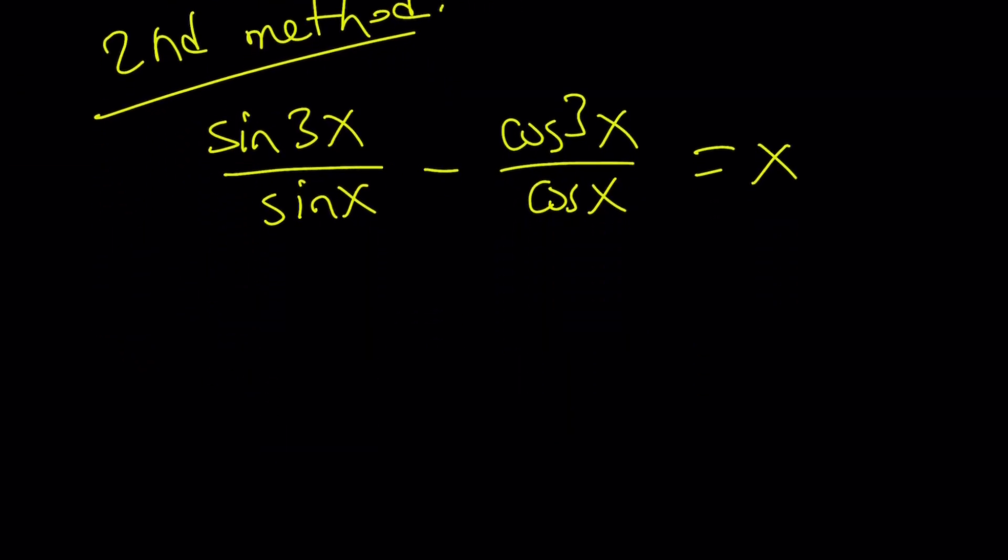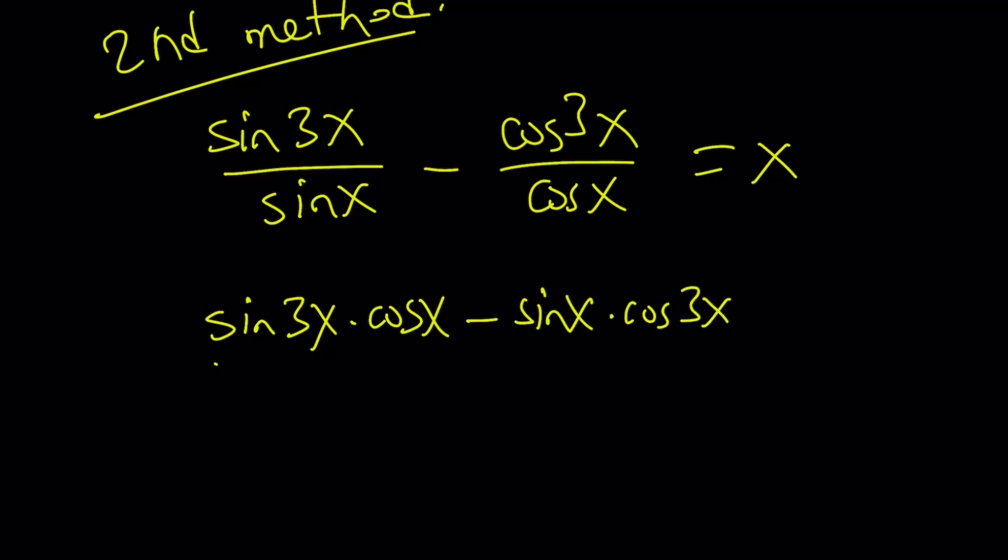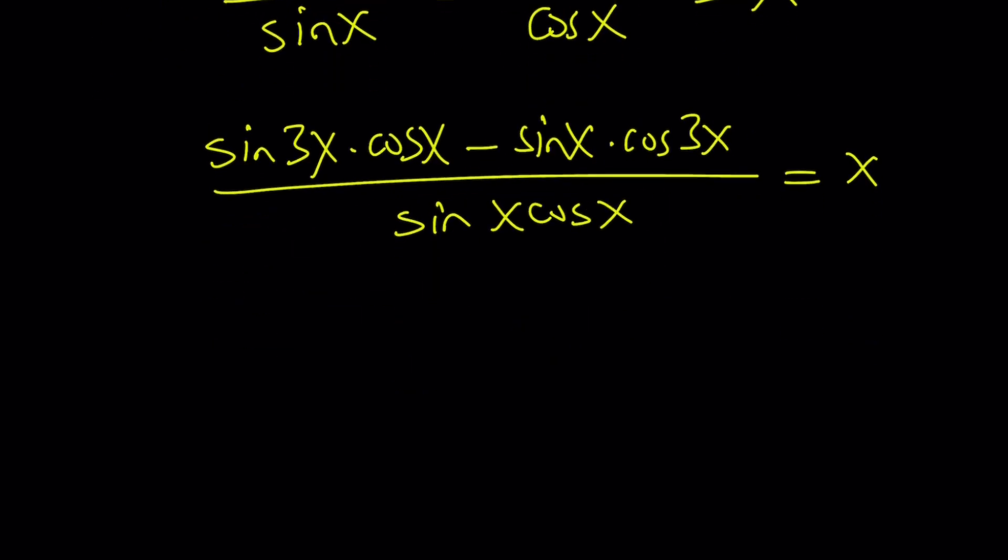With the first method, we use the triple angle formulas. With the second method, we're going to do something amazing. And that is called making a common denominator. Are you not impressed? Okay, let's make a common denominator. We get sin(3x)·cos(x) - sin(x)·cos(3x) all over sin(x)cos(x). Now, the top is sin(a)cos(b) - sin(b)cos(a), which is sin(a - b) or sin(3x - x). Refer to the formulas for sin(a - b) and a plus b. Divided by sin(x)cos(x) = x.